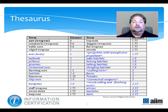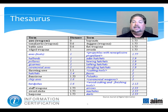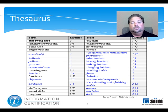A thesaurus ranges far beyond the simple antonyms and synonyms that we learned about in school, although that certainly is a part of it. Also included are comparisons like equal to, and related to, and opposite of, and they're critical to ensuring a correlation can be made between the taxonomies and metadata of every repository, business unit, or functional group touched by the information solution.